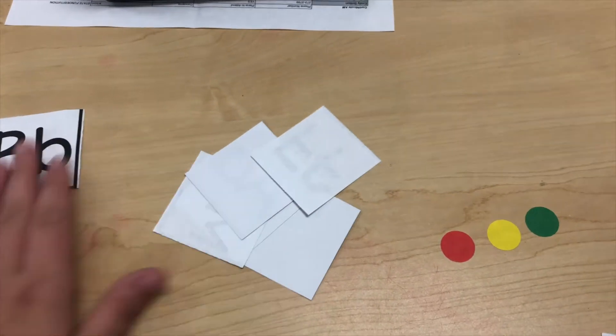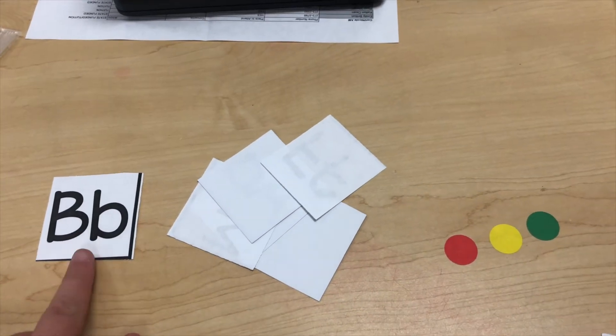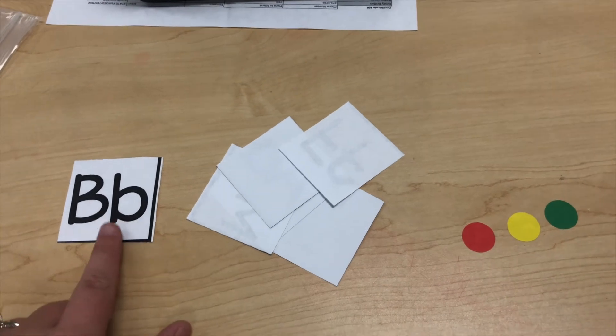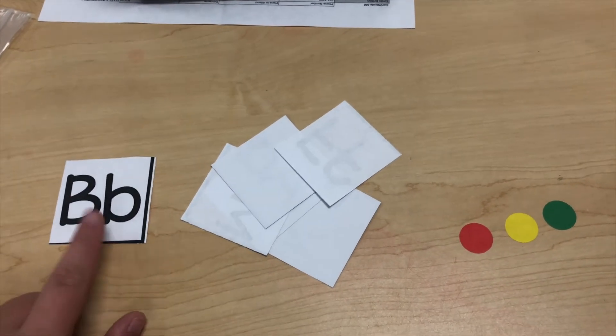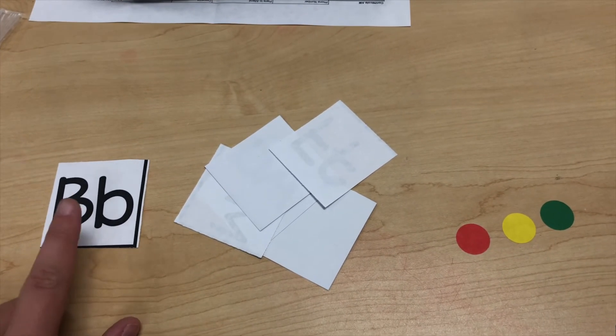And you can always just flip one over and say, all right, what is this? What letter is that? Can you tell me? What sound does it make? Oh, that's a B. It says buh, buh, buh.